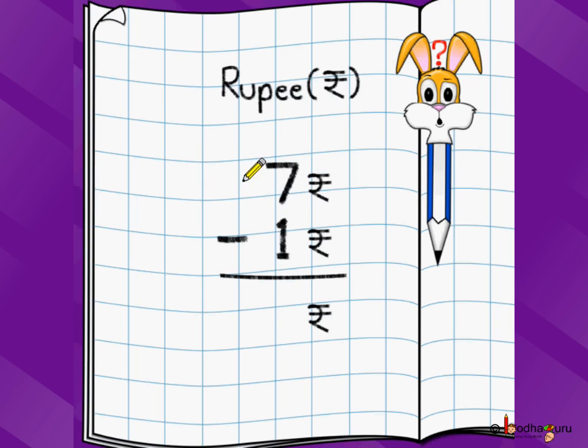Let's say you have seven rupees and you have taken out one rupee. Say maybe you have spent one rupee on something, you bought a chocolate. So, how many rupees are left?